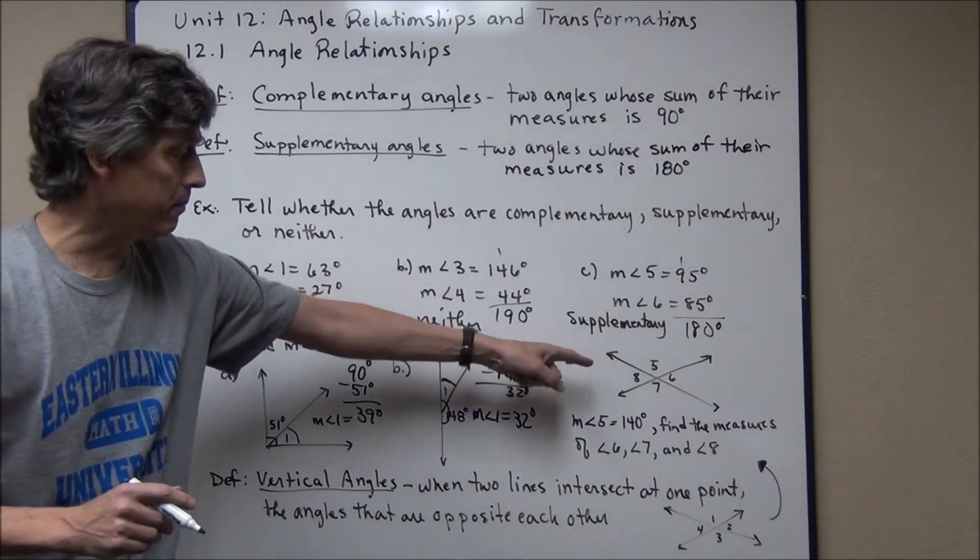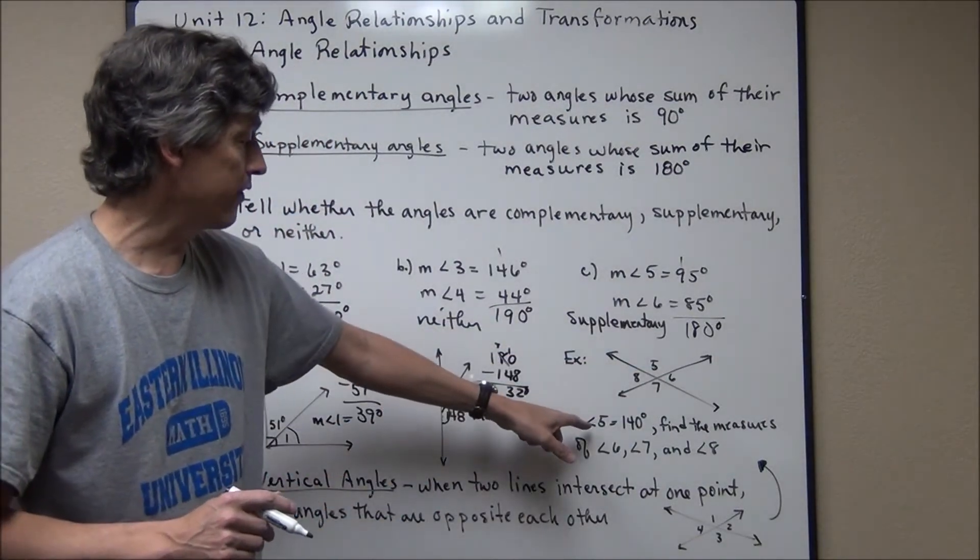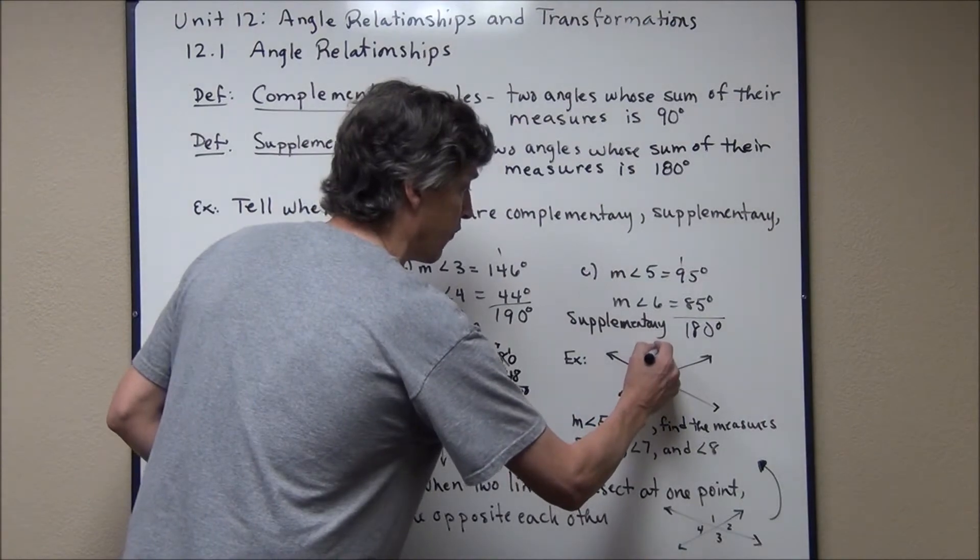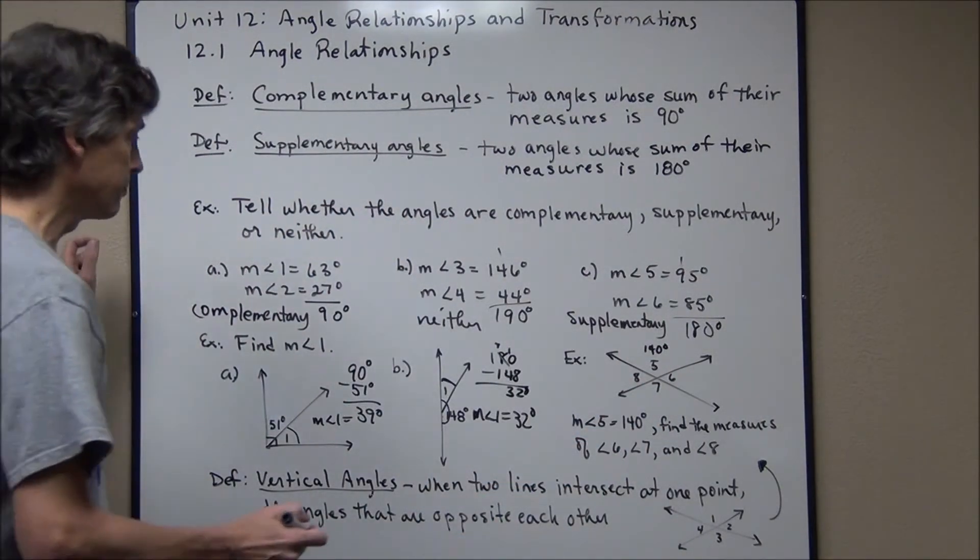Now, let's look at this example up here. I have two intersecting lines. I have angles five, six, seven, and eight here. I have that the measure of angle five is 140 degrees. So this one here is 140 degrees. And you're asked to find the measures of the other angles.